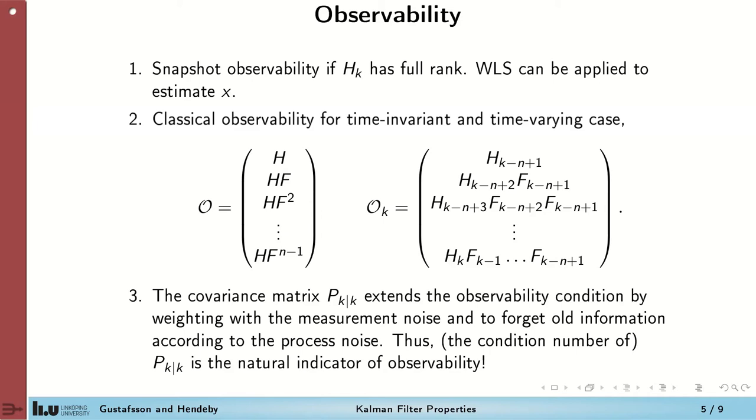Classic observability for both time invariant and time varying cases is defined by the ability to invert the observability matrices. So, these matrices, the time invariant case and the time varying case. More or less this indicates that if you put up the problem as a batch problem we can solve for the initial states.